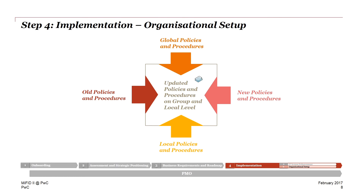A second part of the implementation work is the organizational setup. After the gap analysis is done, the business solution is defined, business concepts and blueprints are written, and the IT systems are changed, implemented, and tested. All existing descriptions — that is, policies and procedures — have to be changed. Normally there are group procedures and group policies on a global level, which have to be developed and documented on a group level primarily and then transferred into local levels in all legal entities.